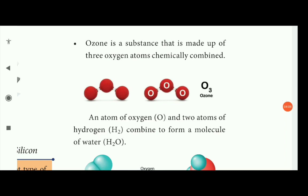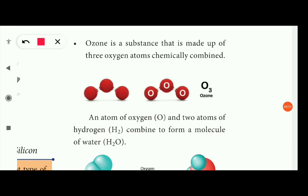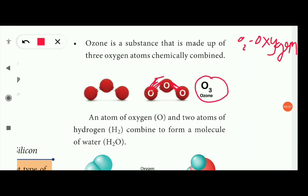Atoms are chemically combined. Oxygen with 2 atoms gives O2. Three oxygen atoms combine to form ozone. An atom of oxygen and 2 atoms of hydrogen combine to form a water molecule.